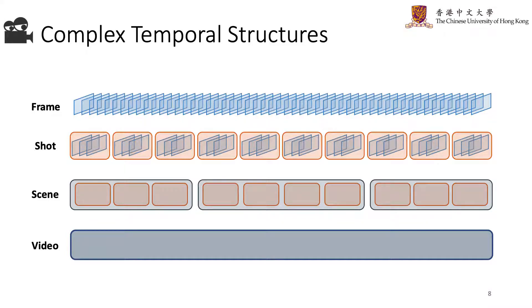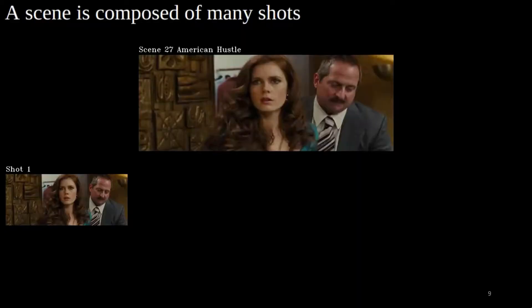Based on shots, a scene is a plot-based semantic unit, where a certain activity takes place among a group of characters — it's usually where an event happens. The ordering and combination of scenes determines a whole movie.